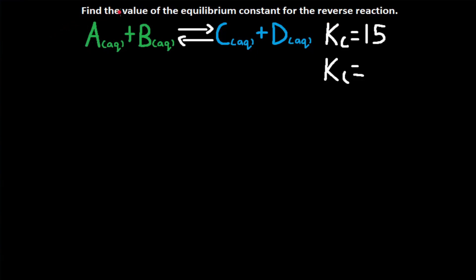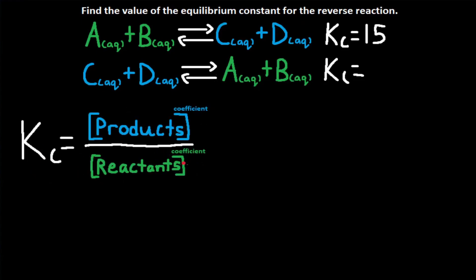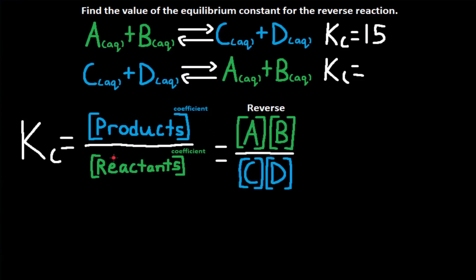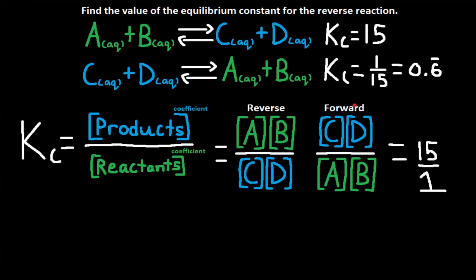Look at this reaction. It asks us to find the value of the equilibrium constant for the reverse reaction. The forward reaction goes from reactants to products, and the reverse reaction goes from products to reactants — C and D to A and B. For the reverse reaction, Kc equals AB divided by CD; for the forward reaction, Kc equals CD divided by AB. The forward Kc is 15. The reverse reaction expression is the reciprocal of the forward one, so 1 divided by 15, which gives Kc equal to 0.0667 repeating.